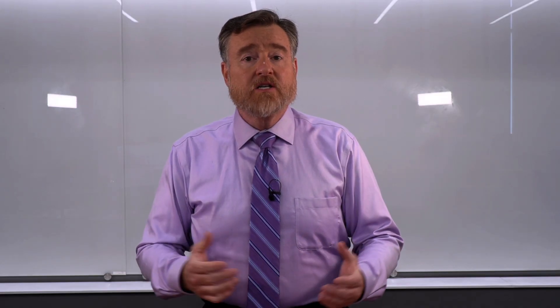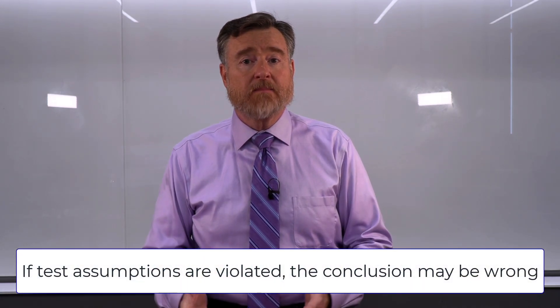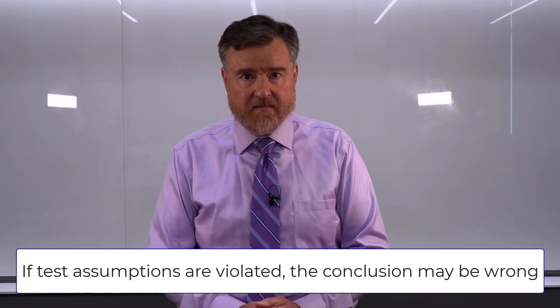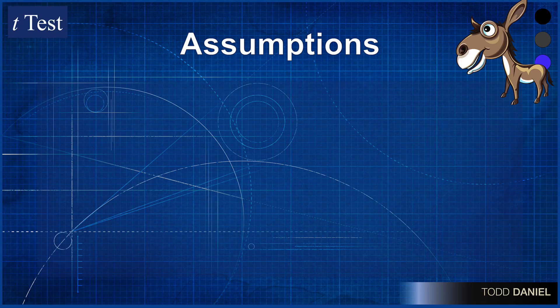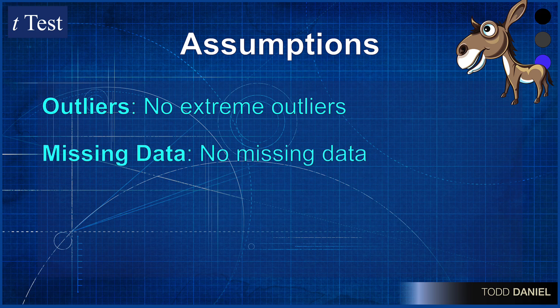Every test is built on certain assumptions. We need to check our data to make sure they meet the assumptions for the one sample t-test. The first assumption is no extreme outliers. If there are outliers that are causing a problem, we will need to exclude them or perhaps Windsorize those outliers. A second assumption is that there is no missing data in our data set. If there is, we might need to impute.